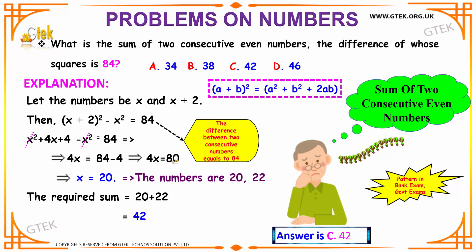84 minus 4 is nothing but 80. x is nothing but 80 by 4 that is 20. Your x value is 20.